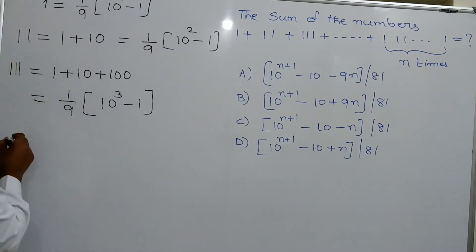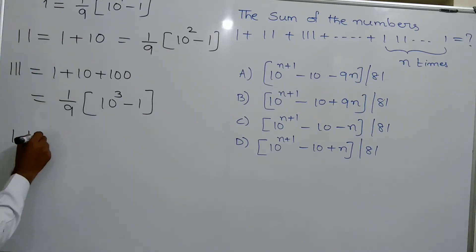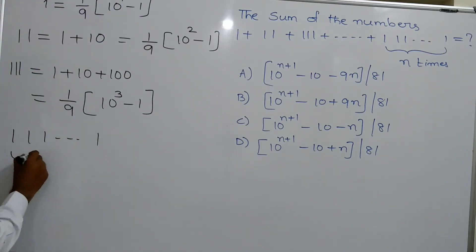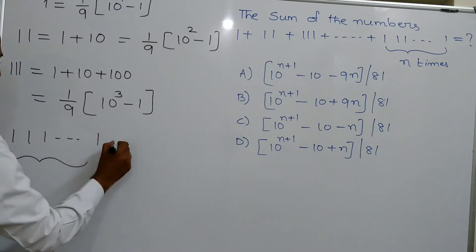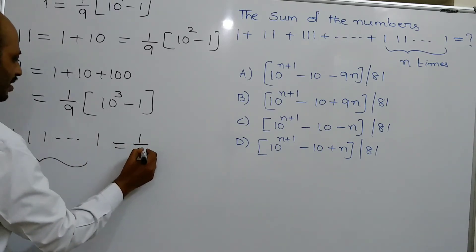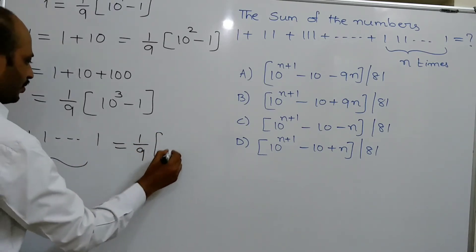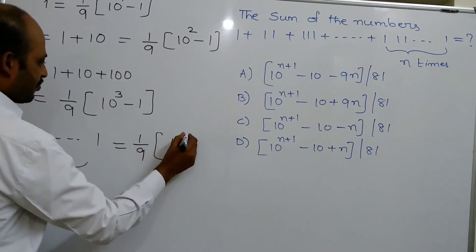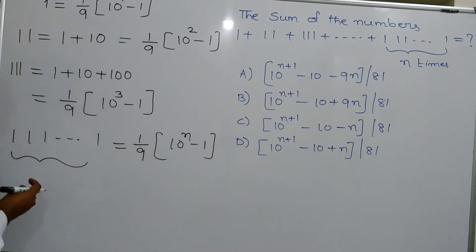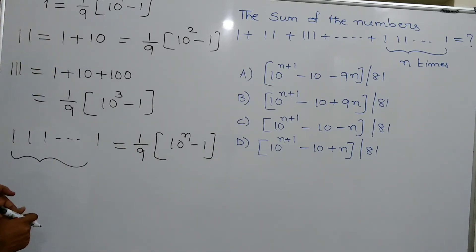And so on. The number 111...1 with n digits is equal to 1 by 9 into (10 power n minus 1).